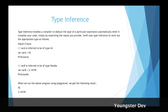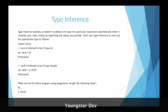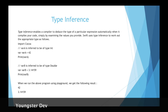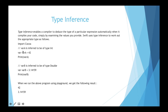Next we have type inference. Type inference enables the compiler to detect the type of a particular expression automatically. For example, if I declare a variable and initialize an integer value, the compiler will automatically detect it is integer type. If I initialize a double value, the variable will be inferred to be of type double. This is type inference in Swift, and it is also a plus point of the language.